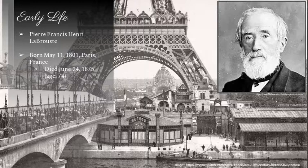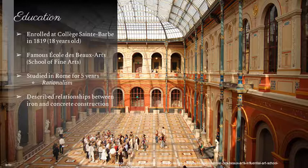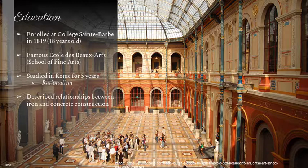His full name was Pierre-François-Henri Labrouste. He was born May 11, 1801 in Paris, and then he died at the age of 74. As far as early education, he was enrolled at the Collège Sainte-Barbe in 1819 when he was only 18 years old.